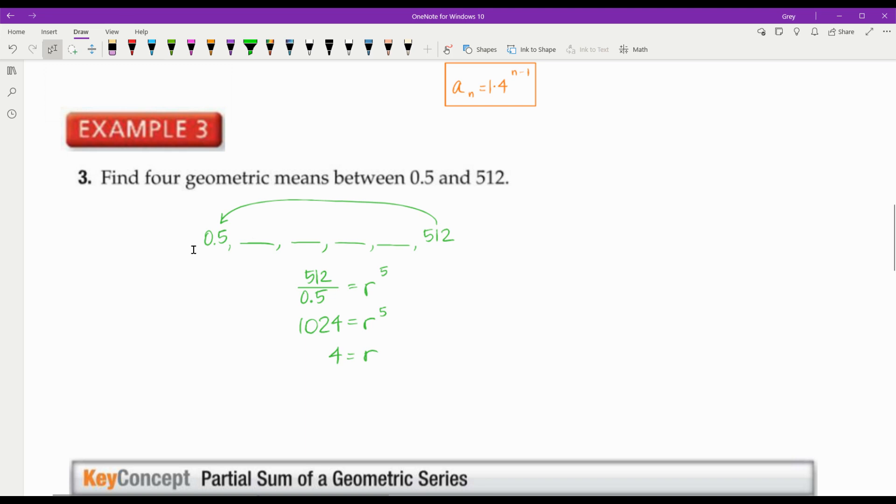So that means I'm going to multiply 0.5 times 4. 0.5 times r, which is 4. So 0.5 times 4 is 2 times 4 is 8 times 4 is 32 times 4 is 128. And 128 times 4 is 512. So I know that I've done it correctly. And those are my four geometric means.